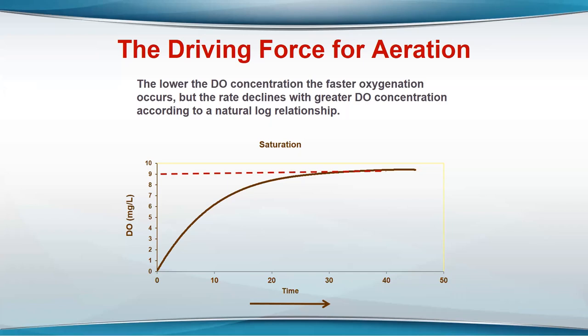The closer the curve becomes to saturation, the slower the aeration rate is. With aeration, you really need to try to raise the oxygen to five or six parts per million because that's where the aerator is most efficient. When the pond has more oxygen than that, you can usually turn the aerator off — especially in green water ponds, though that's not true in biofloc systems.